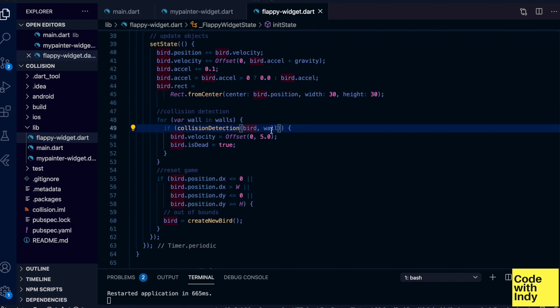And then, I check for collisions of each wall. Optimization can be made here, but I haven't. And if the bird had collided, then I set the vertical velocity to five, and the horizontal to zero. This gives the dead bird falling effect. Then, I have the reset game routine, if the bird goes out of the screen bounds.